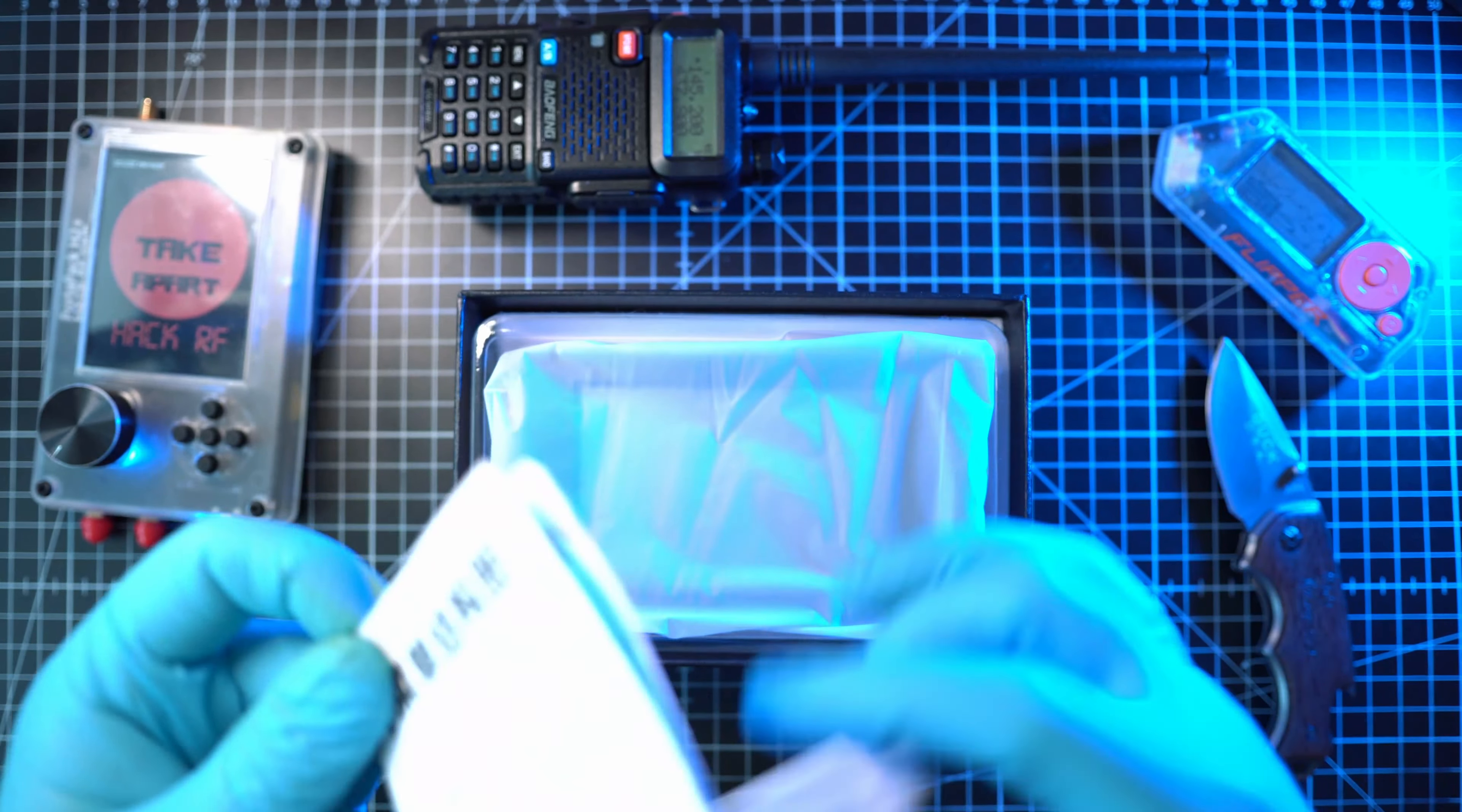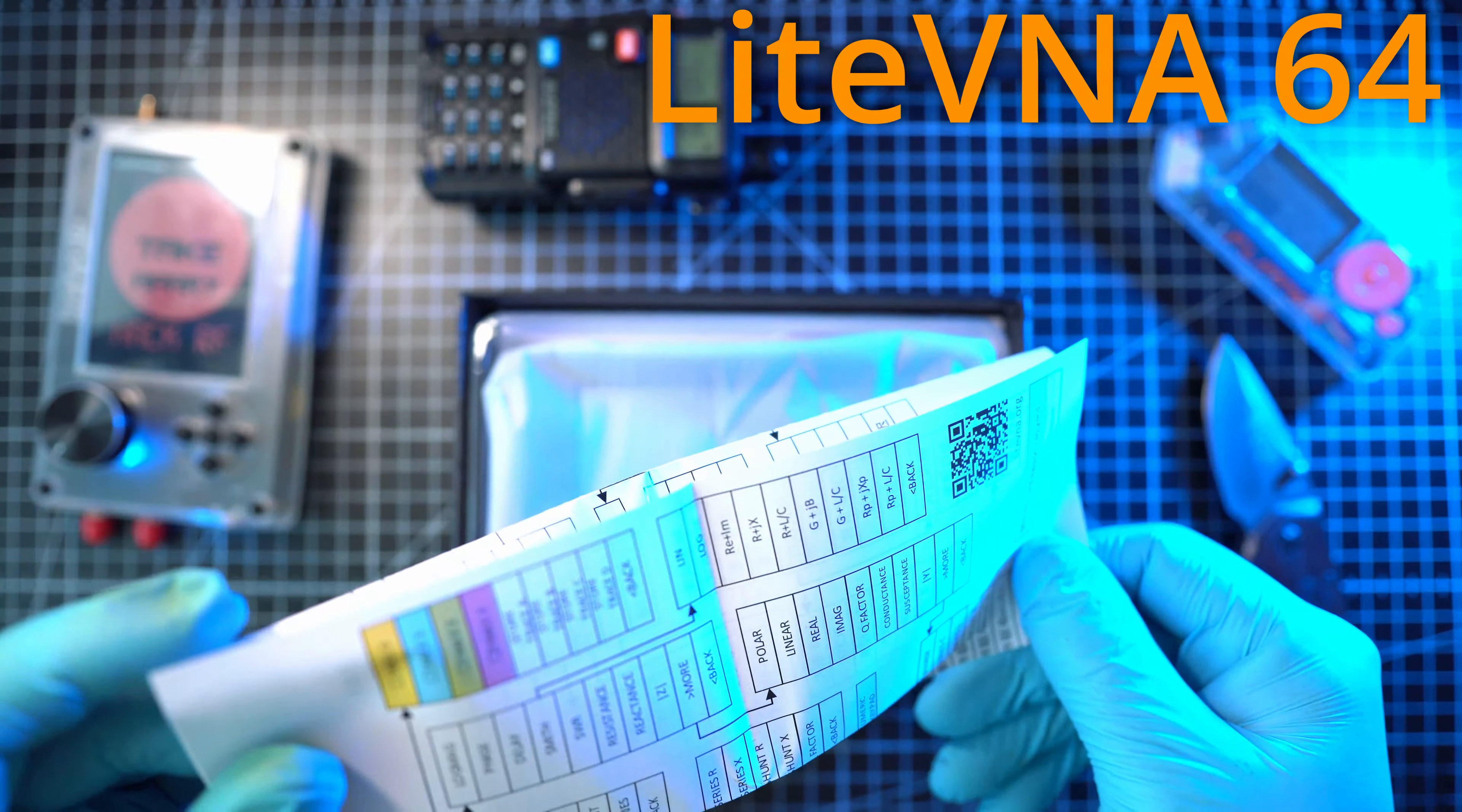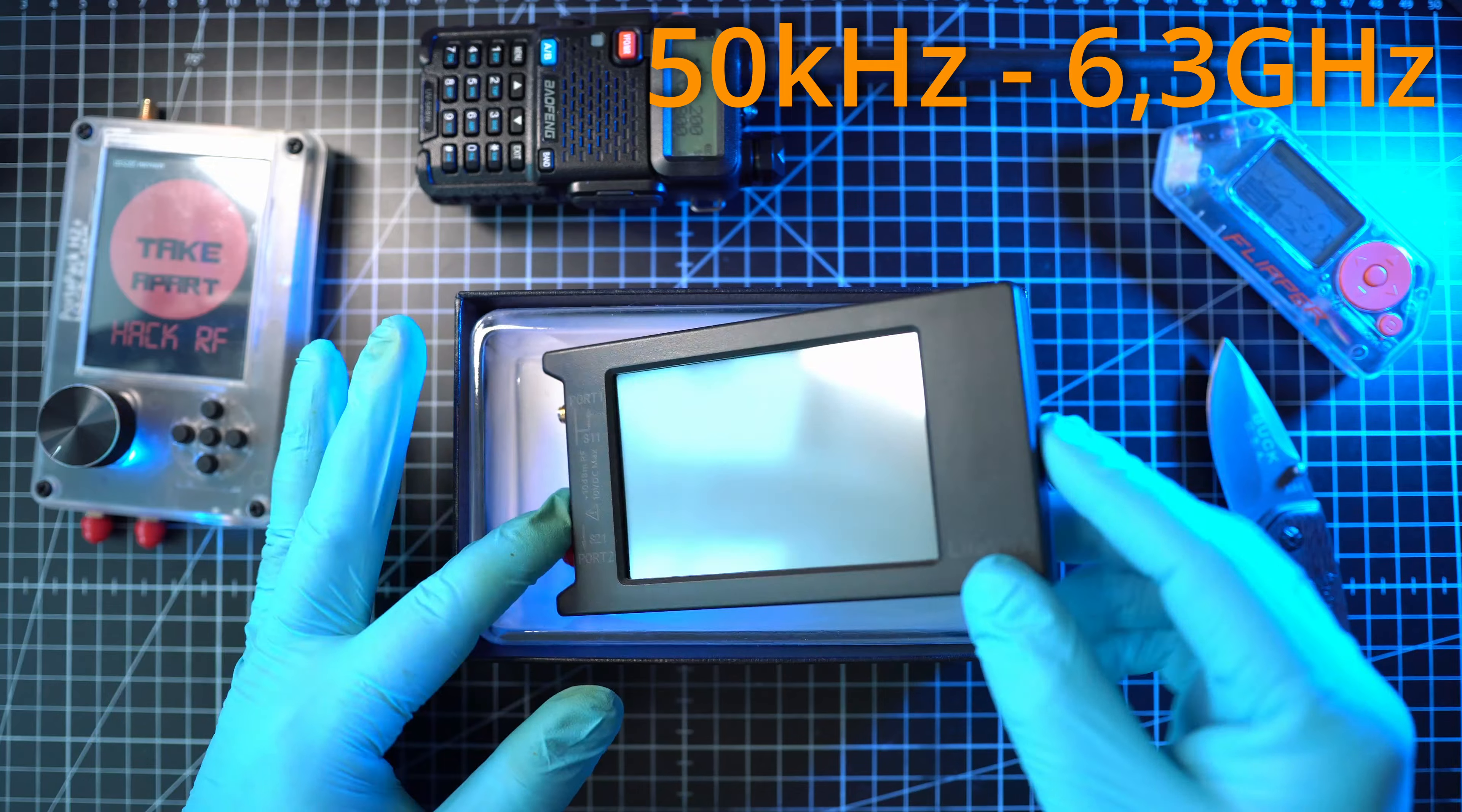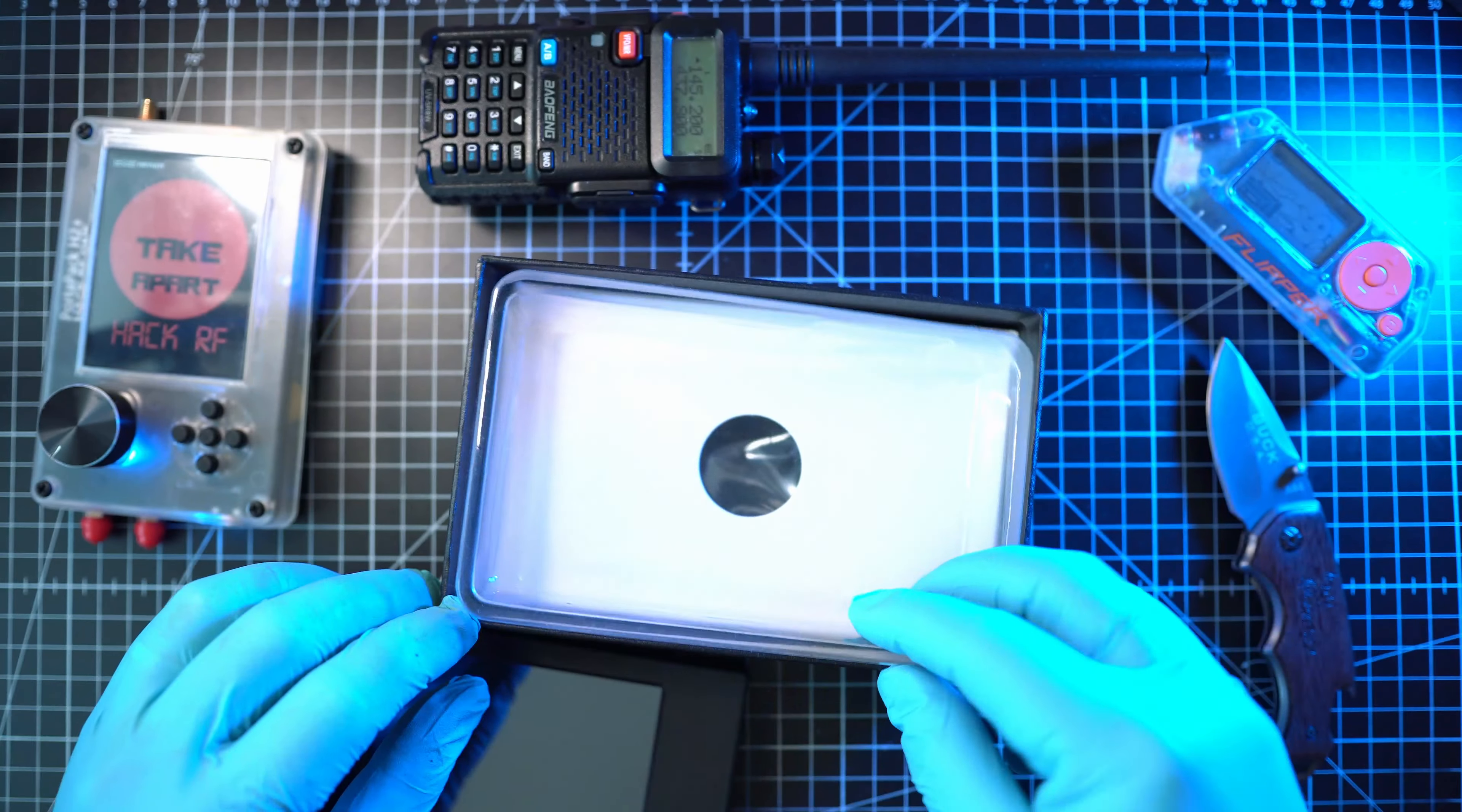But first, let me unbox mine. I got LiteVNA 64. It has range from 50 kilohertz to 6.3 gigahertz. It is one super cool unit.